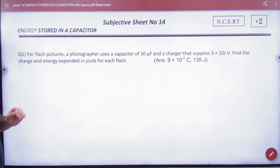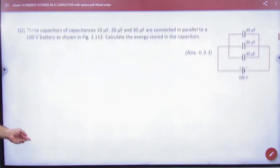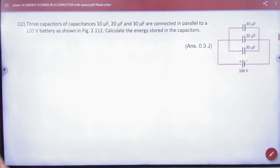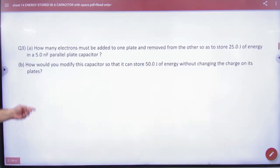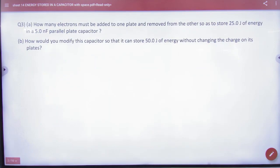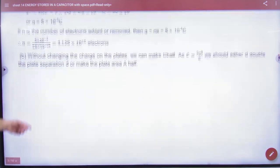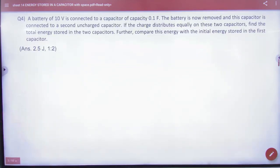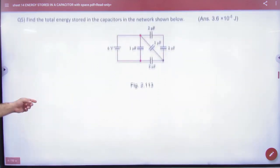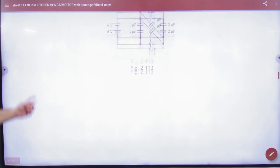Subjective sheet number 14. Question number 1 made out - half CV squared. Question number 2 made out, question number 3 made out, 4 made out, 5 made out.